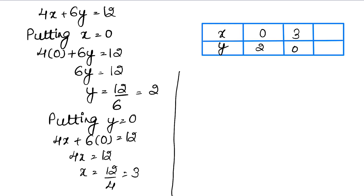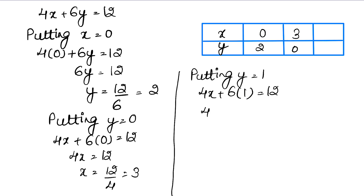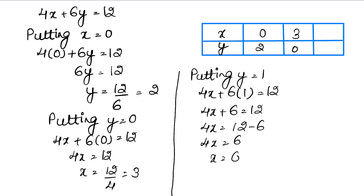Putting y equals to 1: we have 4x plus 6 into 1 equals to 12, so 4x plus 6 equals to 12, so 4x equals to 12 minus 6, that is 6. So x equals to 6 upon 4, which is 3 upon 2, that is 1.5. So when y is 1, x is 1.5.